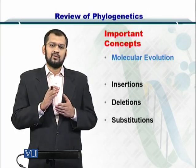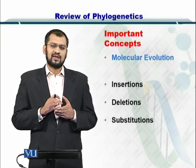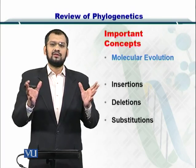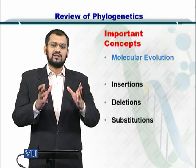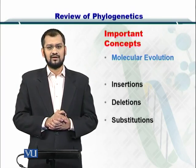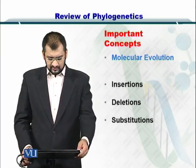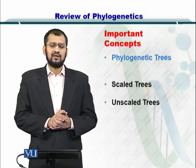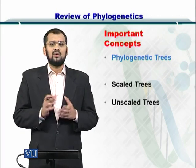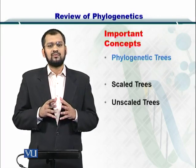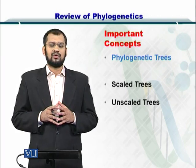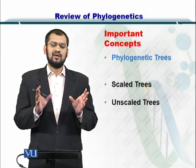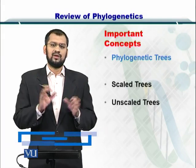Once these three mechanisms kick in, the sequences start diverging and speciation and other such events occur. In order to study such variation in species, we can construct phylogenetic trees or simple relationship trees, wherein we can see the distance between various species.